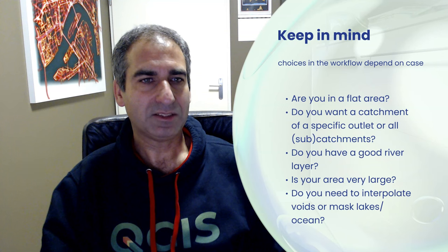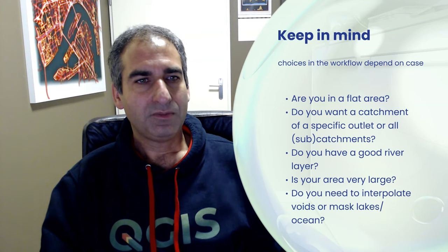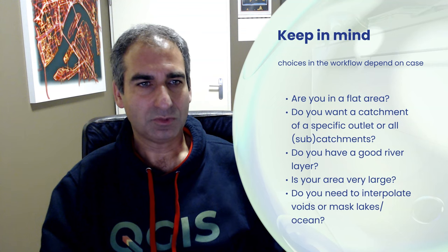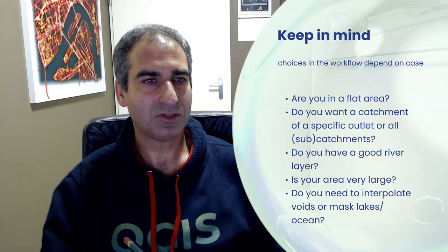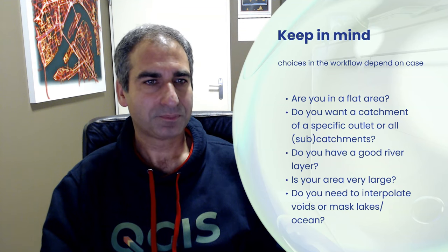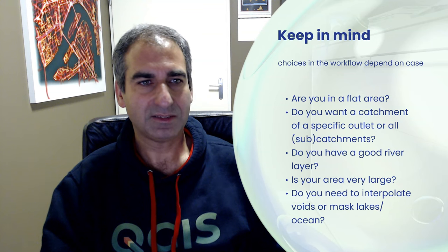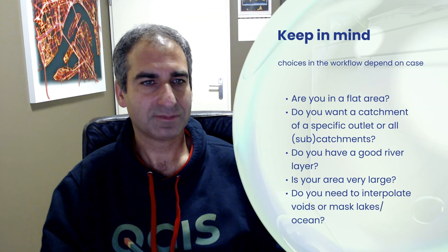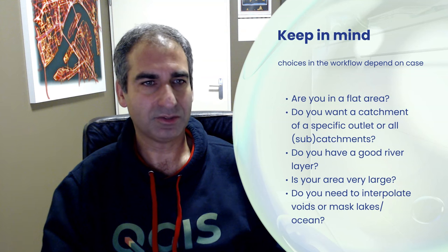With PCRaster, for example, you can use the pits algorithm to find those and then feed that into the catchment tool. If you already have a river layer available, it is useful to burn in the stream network in your DEM to get more realistic results. Often this can be a little bit difficult and depends on settings and algorithms. If your area is very large, you might want to use more robust tools for the fill sinks algorithm. You could also choose to use coarser pixels, because for very large catchments it doesn't really make sense to use the finest pixel resolution. Also, don't forget to interpolate the voids, or if your catchment ends up in a lake or in the ocean, you need to mask those pixels. Otherwise, the wrong elevations there will also be used in your algorithms.